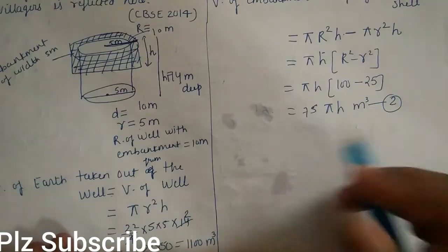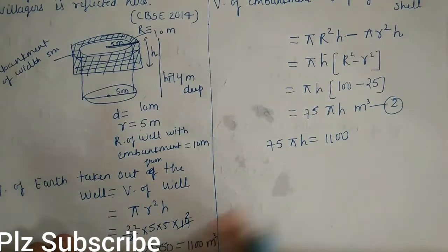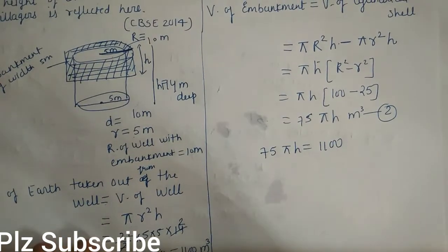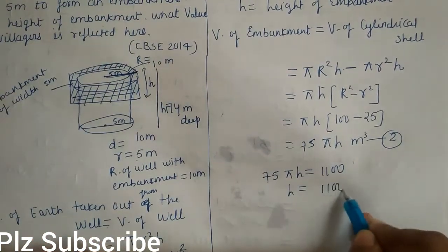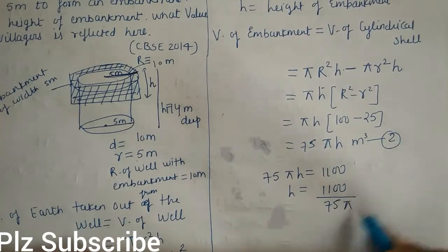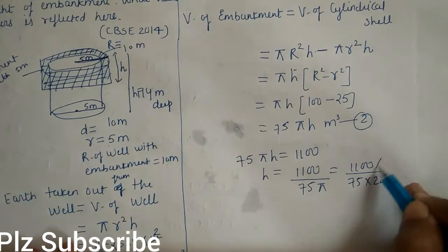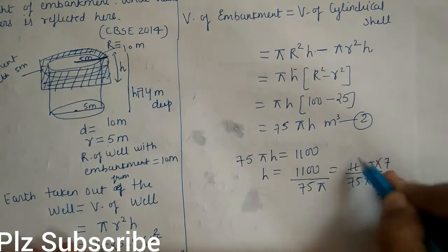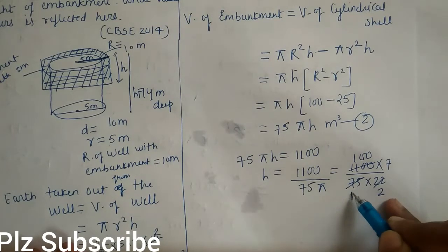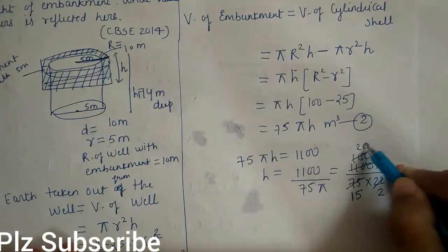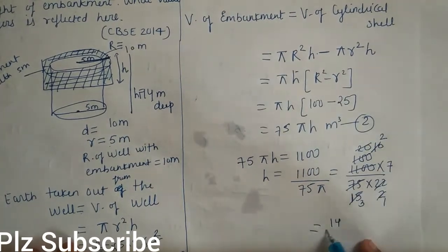Now, volume of embankment equals volume of earth taken out. So 75 π H = 1100. Therefore H = 1100 / (75π) = 1100 / (75 × 22/7). Simplifying: H = 14/3 meter.